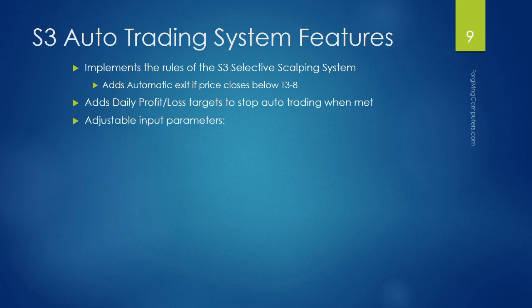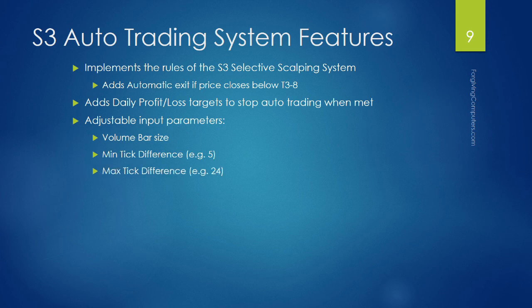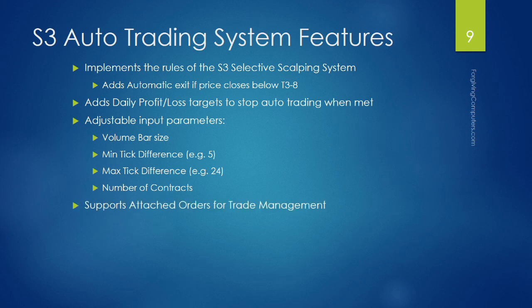You can adjust the input parameters — for example, the volume bar size is always adjustable, the minimum tick difference (in our case 5 ticks), or the maximum difference (24 ticks). This is the difference between the regular color bars and the dark cyan or magenta bars. You can also adjust the number of contracts. If you want to trade two or more contracts with an initial target and a higher target so you can have a runner, you can do that. It supports attached orders, where you can set your target and stop with trailing stop parameters, so that when you enter the market order it basically enters an OCO order with an entry, a stop, and a target.